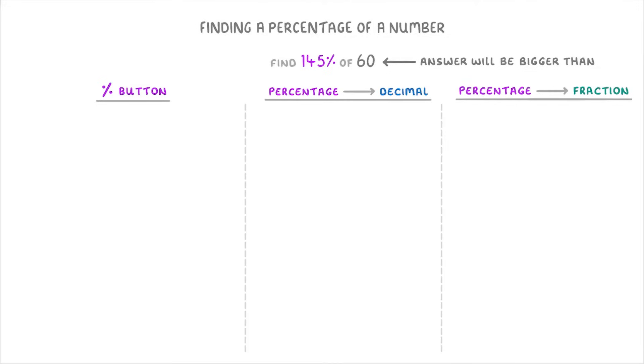But it doesn't make any difference to how we do it. So we can still use the percentage button on our calculator, and do 145% times 60. The decimal technique, by dividing 145 by 100 to get 1.45 and multiplying that by 60. Or the fraction technique, by dividing 145 by 100 and multiplying that by 60. In all cases, we'll get an answer of 87.